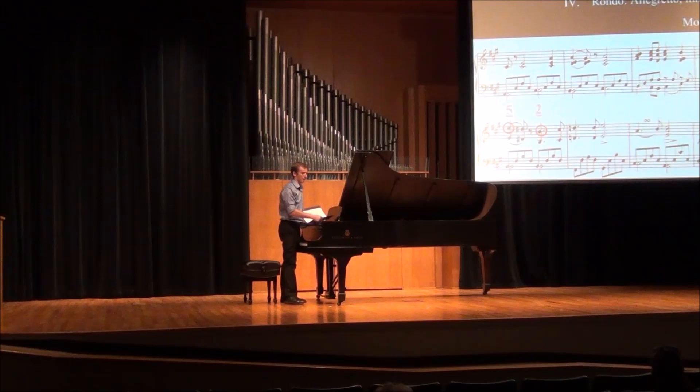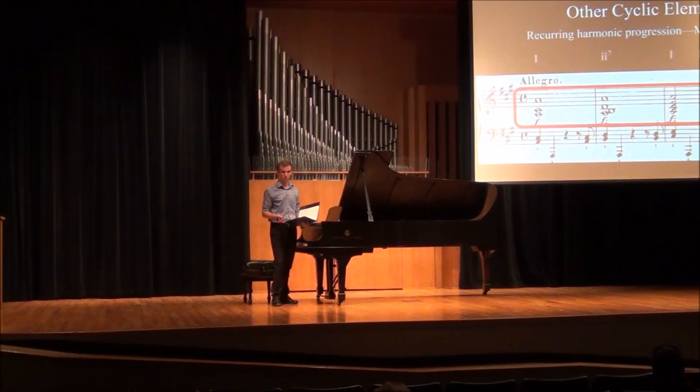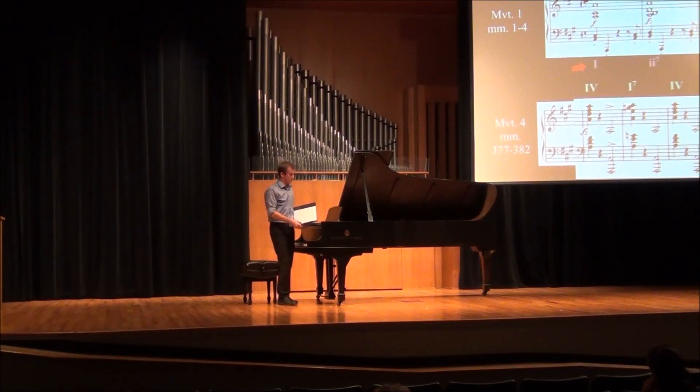Now we will look at other cyclic elements in this sonata. The first is a harmonic progression that appears in the opening of the first movement in the first four measures. It consists first of the tonic I chord, followed by a minor II-7 chord, then I, IV, I-7, IV, and I. It appears again at the very end of the last movement in retrograde order — in reverse — which means the first chord is now the last chord, and so on.